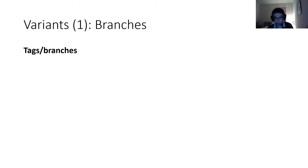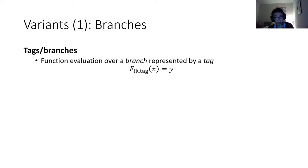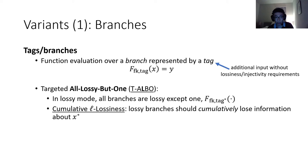So that's targeted lossy functions. We also consider some strengthenings for applications. The first add-on is the presence of tags or branches, which adds a new kind of input. A tag defines an execution branch of the function. In the targeted all-lossy-but-one function, or T-ALBO, most branches are lossy and there is a special branch that is injective — that's in lossy mode. In injective mode, everything is injective.